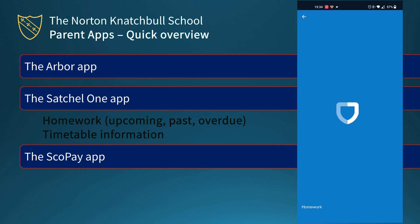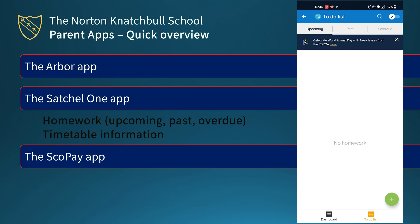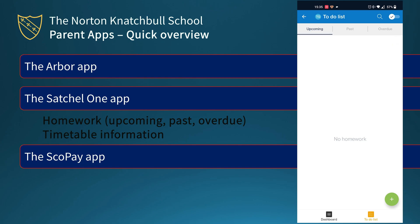The homework section is where you'll spend most of your time. If you click 'Show All Tasks', you'll see an upcoming section, a past section, and an overdue section. Again, because this is the summer holidays, there are no homeworks listed at the moment, but you'll see a long list once term begins. If you click on a homework, you'll see the task itself and any attachments that have been added. Students can also sign into the app using the Office 365 link, once they've signed into Office 365 in school, giving them quick access to the tasks they need to do.